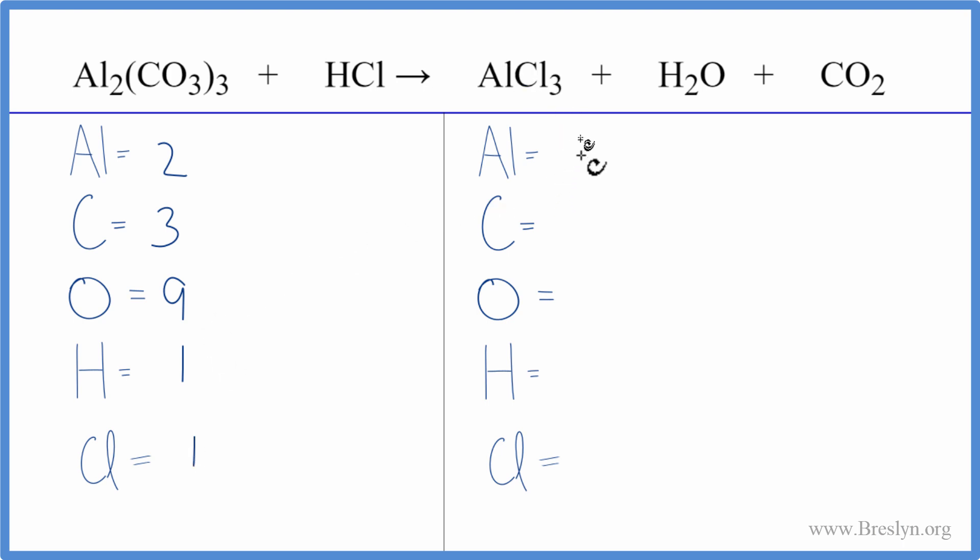On the product side, we have the one aluminum, carbons we have one of those, oxygens we have one, plus we have these two here in the carbon dioxide. So that gives us three oxygen atoms, two hydrogens, and then three chlorines.